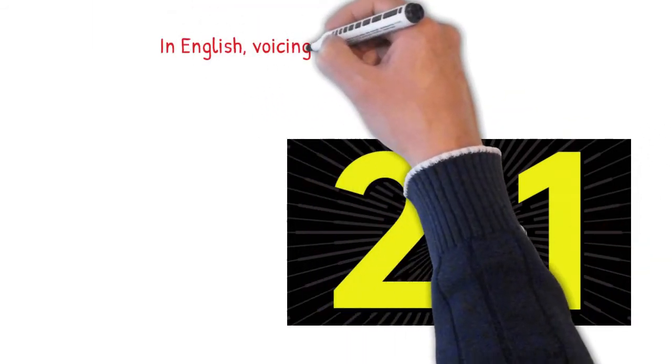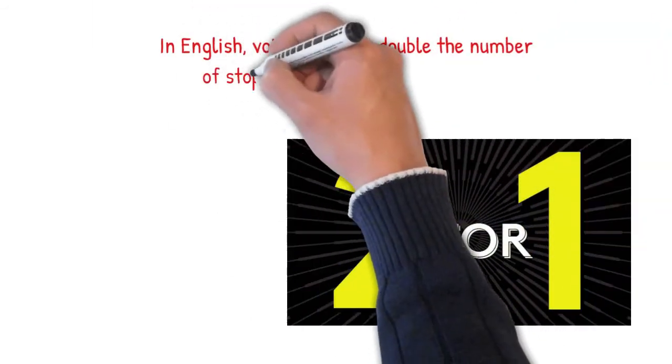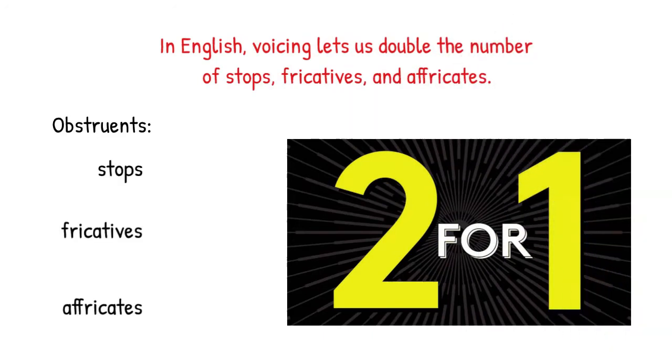So this is basically like a big two-for-one deal. What I mean is that voicing lets us double the number of obstruent consonants we have in English. The only difference between, say, P and B, or between S and Z, is voicing.